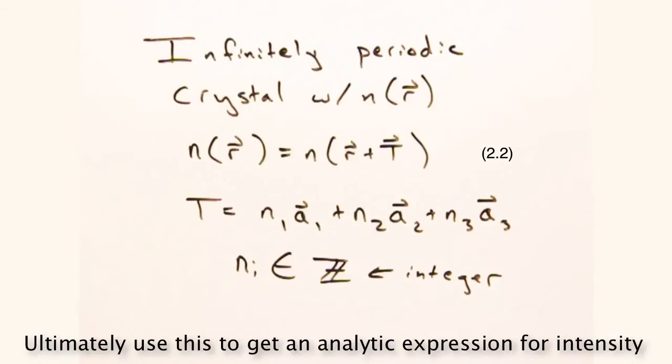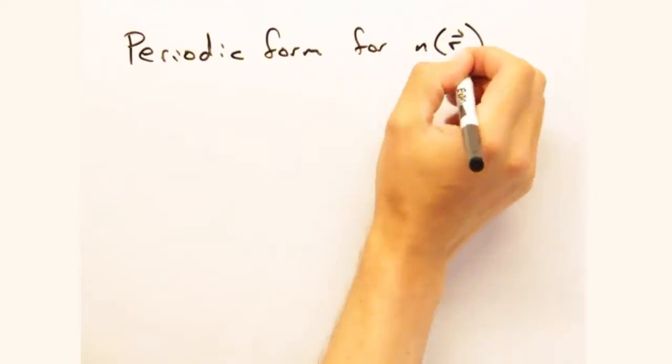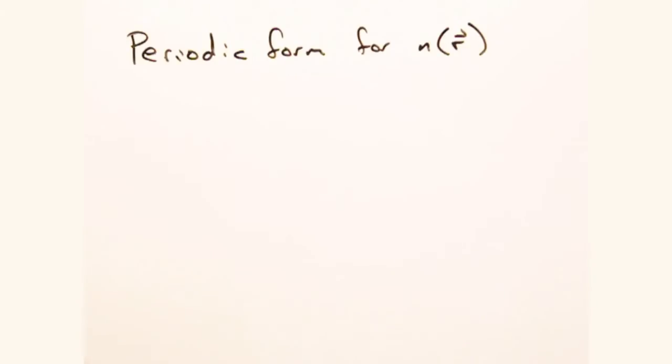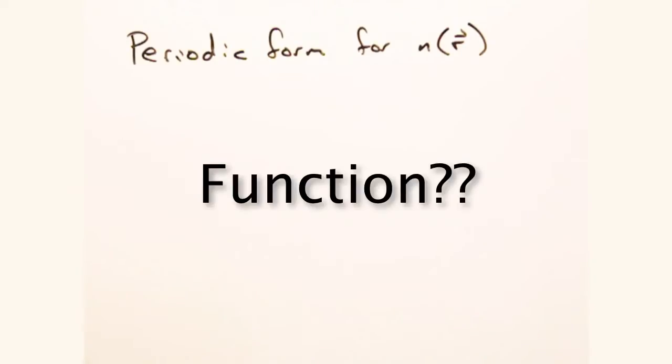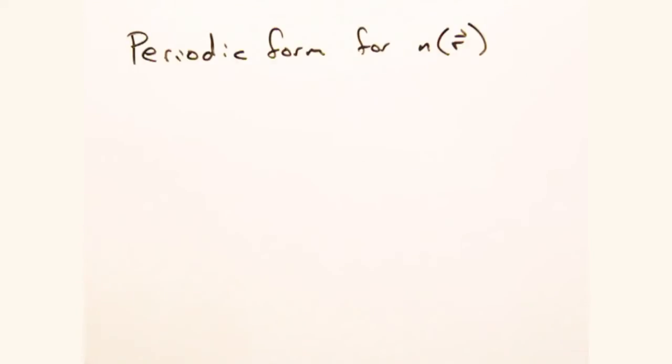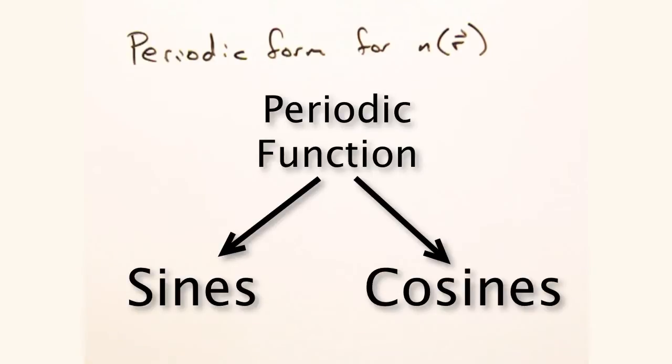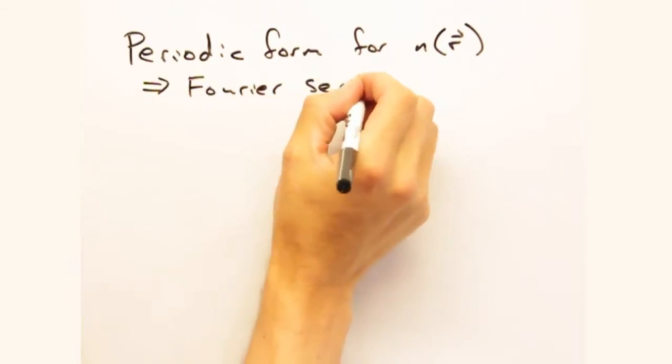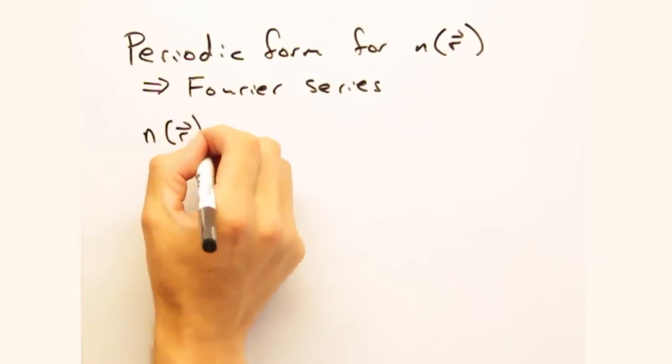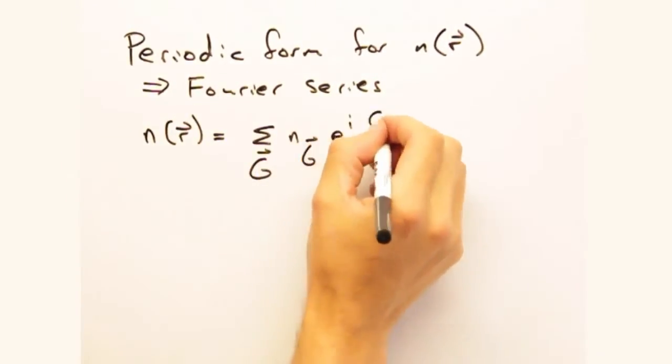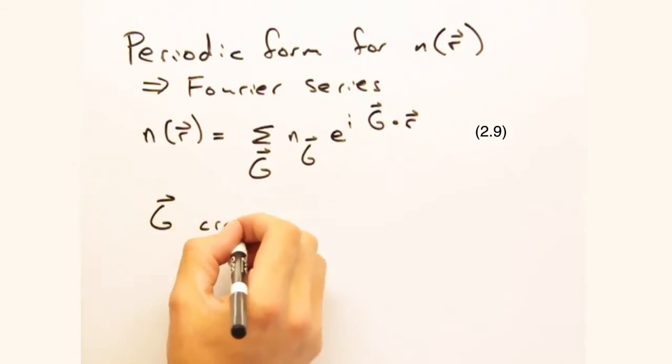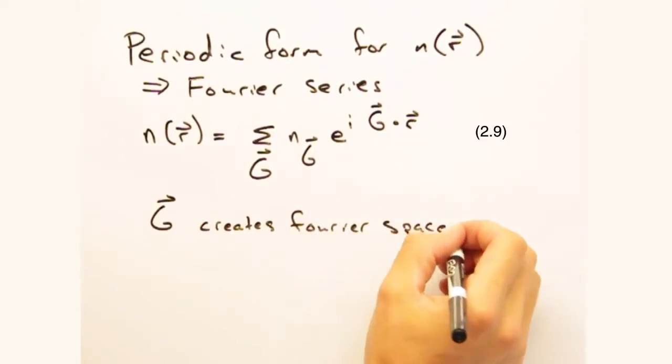So rather than trying to integrate over an entire sample volume, like in the intensity equation, wouldn't it just be easier to choose a periodic form for n of r? Yeah, it would. But what periodic function should we use? I don't know. But that's okay, because I know any periodic function can be built using a combination of other periodic functions, like sines and cosines. But because there might be complex components, we'll build n of r as a summation of complex exponentials that are summed over this vector g. And really, this vector g business represents the Fourier space that we build our wave in.